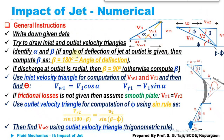The first general rule: always write down all the given data from the numerical. Then try to draw the inlet and outlet velocity triangles. Once you draw the inlet and outlet velocity triangles, nothing complex remains in the numerical, because you can simply use trigonometrical rules to compute various angles and components like Vf1, Vw1, Vw2, beta, phi, and so on.